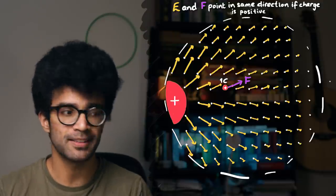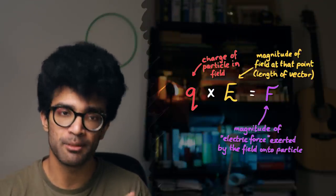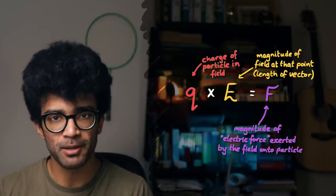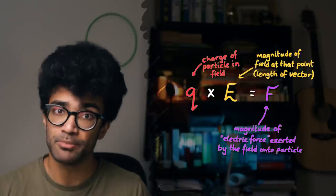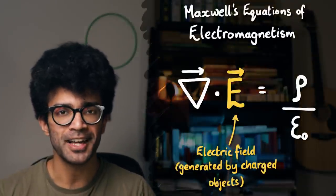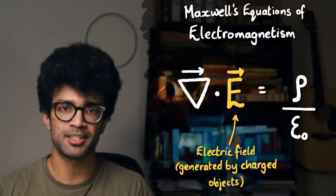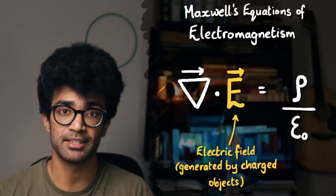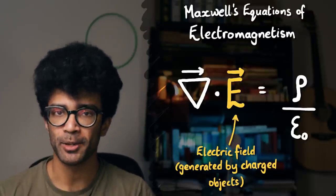More interestingly, we also learn that the force experienced by a particle in an electric field equals the charge on that particle multiplied by the magnitude of the vector at that point. So the electric field represents forces felt by charged particles, while removing the dependence on the specific charges of those particles. The E in the equation represents the whole of the electric field — the arrow above E tells us it's a vector field.